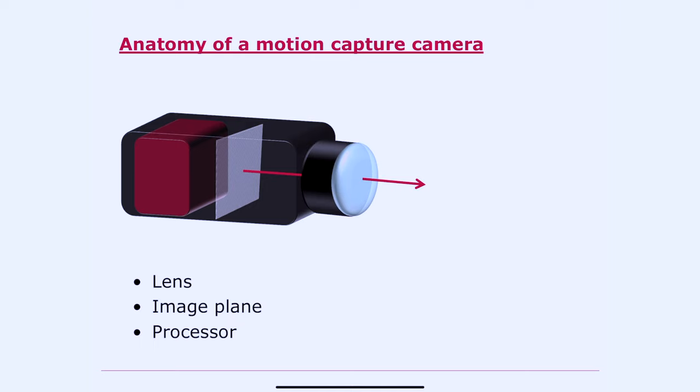So let's just look at the basic anatomy of a motion capture camera, just to make sure we're on the same page here. So the camera has a lens, of course. There's an image plane. Now the image plane you can imagine as the array of pixels that's going to be lit up by objects in the world, objects that the camera is looking at.